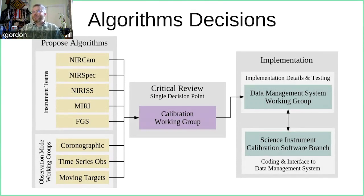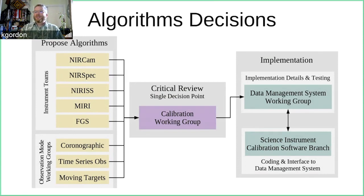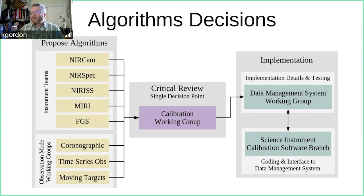Once those decisions are made, it goes into the implementation phase, which is handled by the Data Management Systems Working Group and the Science Instrument Calibration Software Branch. That covers the differences between implementation details, testing, coding, and doing the interface to the large automated data management system that runs everything.